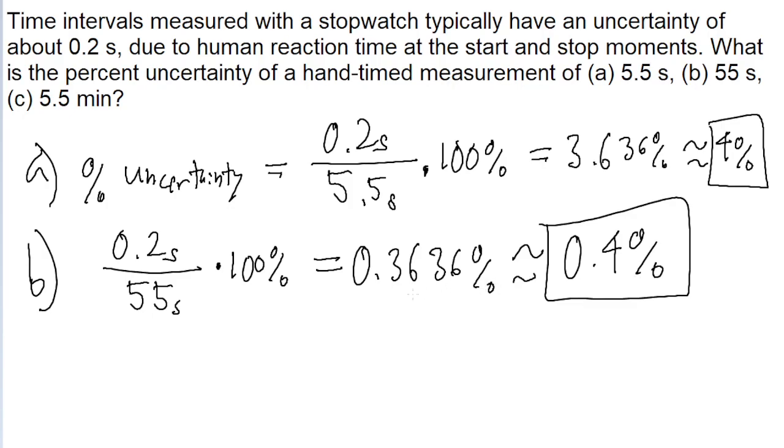Part C is where things get trickier, because the measurement we're given is 5.5 minutes. You can't just take 0.2 seconds and divide it by 5.5 minutes, because the units won't match up. The units need to be the same for us to perform these divisions, because the units cancel out and everything works out nicely and cleanly.